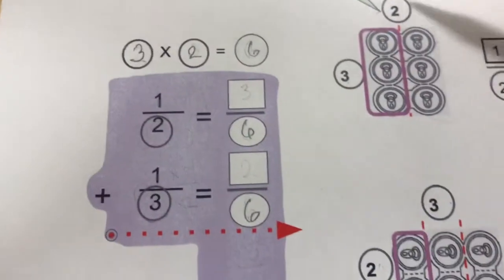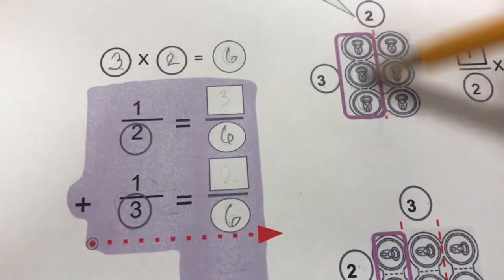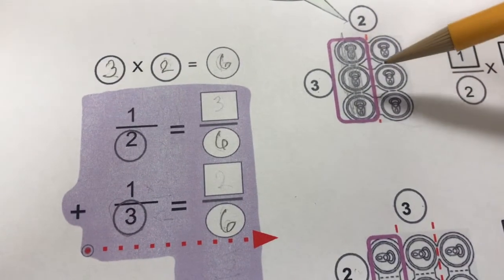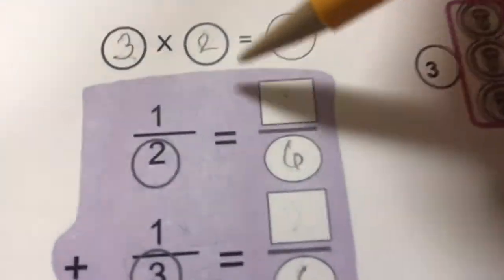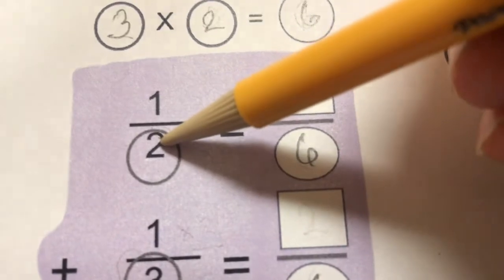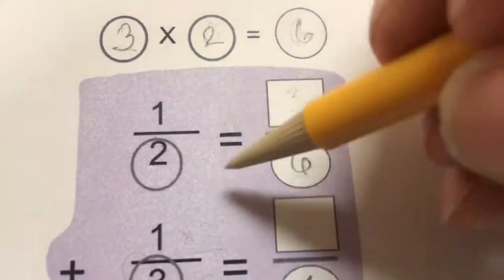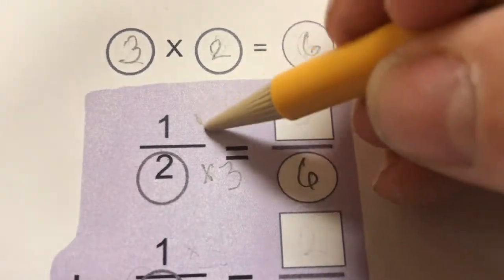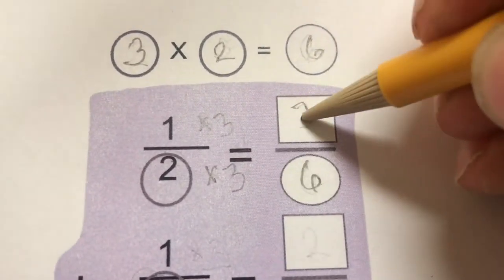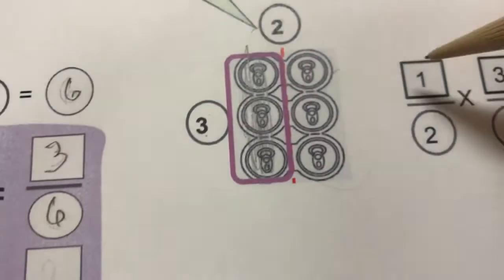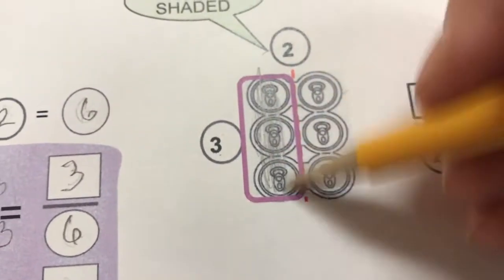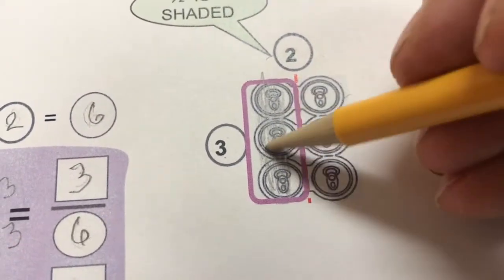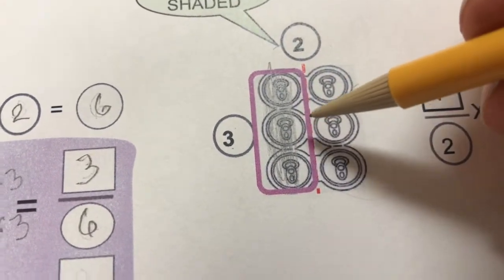So 1 half of that six-pack, yeah look, it's going to be 3 cans, 3 out of 6. Let's do it procedurally. Take this 2. How do I get the 6? Well, I'm going to have to multiply it by 3. Also, multiply the numerator by 3, we'll get 3 sixths. Same as in this picture. Here's half of the six-pack. 1 half, in terms of cans, is 3 cans out of 6.